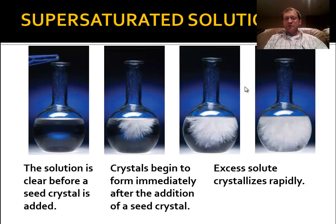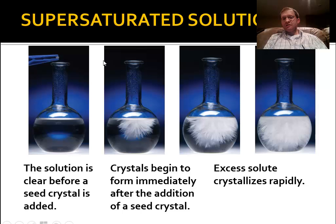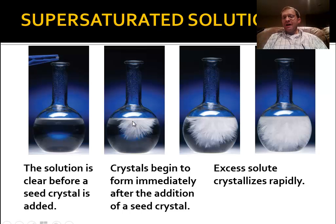Here's a picture of a supersaturated solution being disrupted. Starting with a clear flask on the left, you can't see anything in the solution. But when a tiny crystal — called a seed crystal — is dropped in from forceps, it hits the surface and begins to crystallize and grow. Countless more crystals grow off of it; all the excess beyond capacity crystallizes back out around that seed crystal. Pretty soon the entire flask is full of crystals, often until the solution seems to have turned into a solid mass.